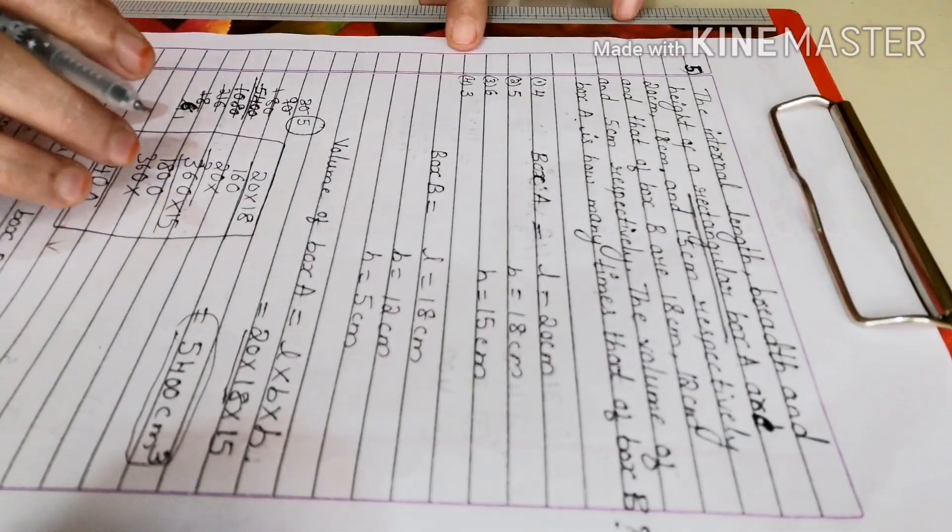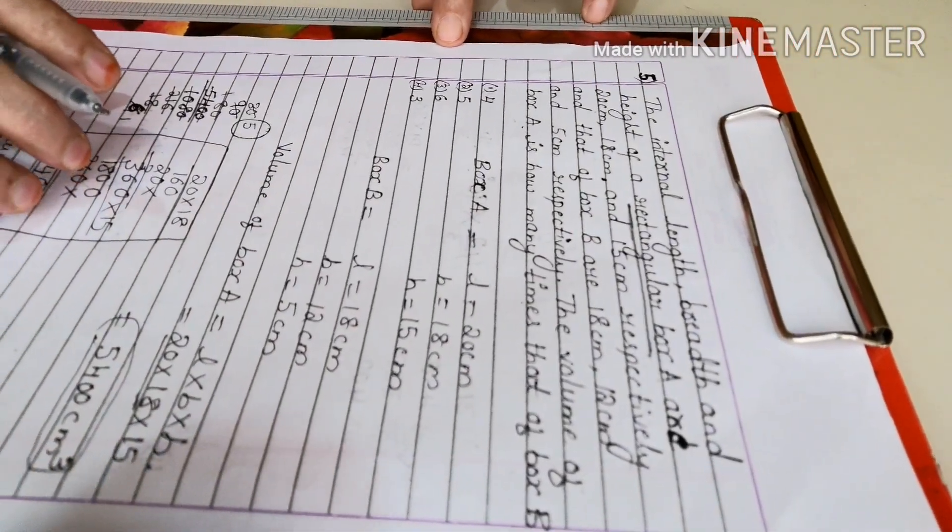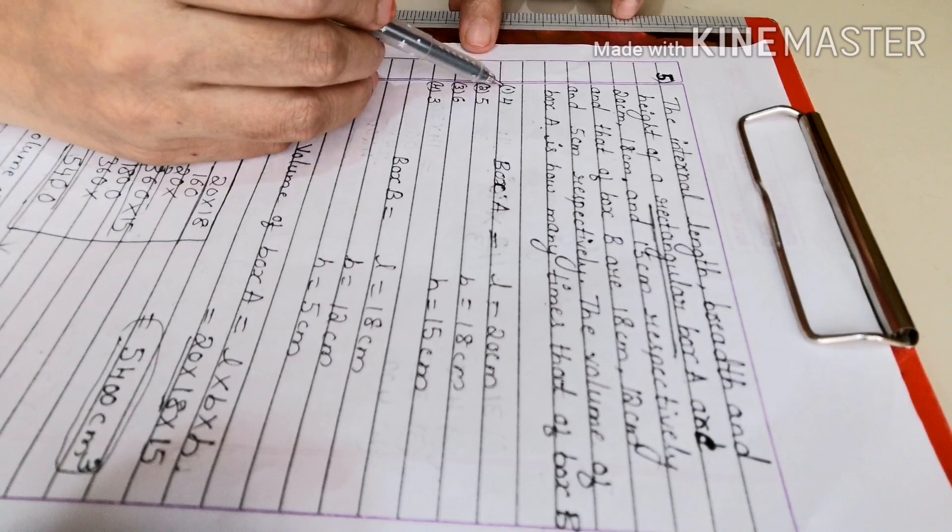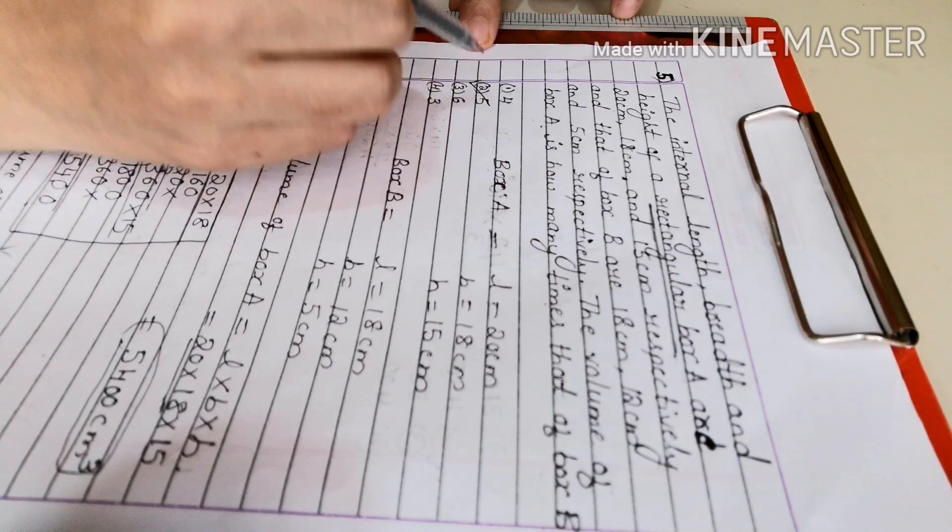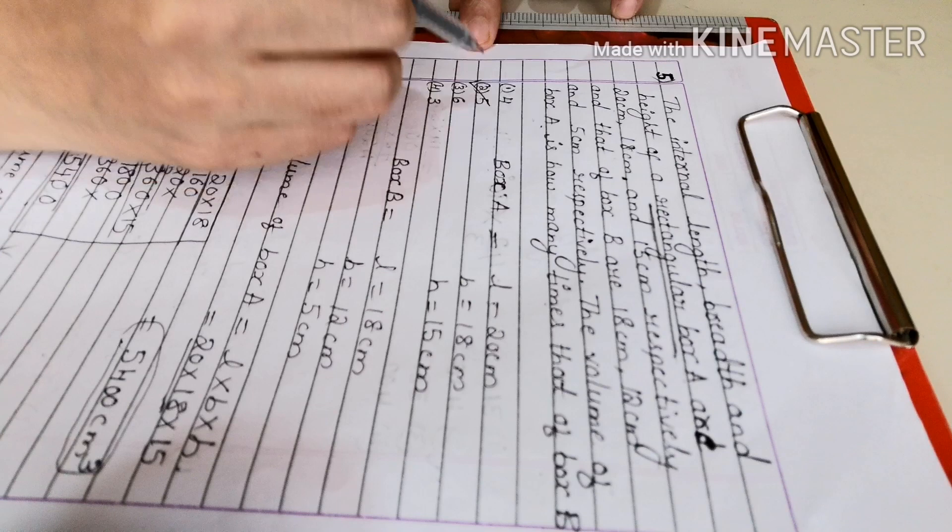I will check the option. 5 is the option. Option 2, 5 is the right answer. So the volume of box A is 5 times that of volume of box B.